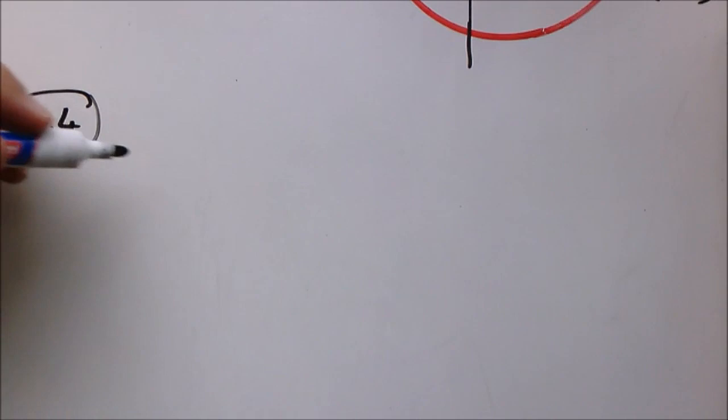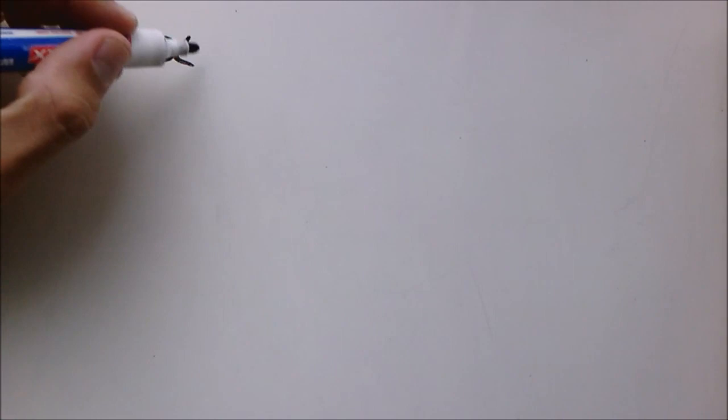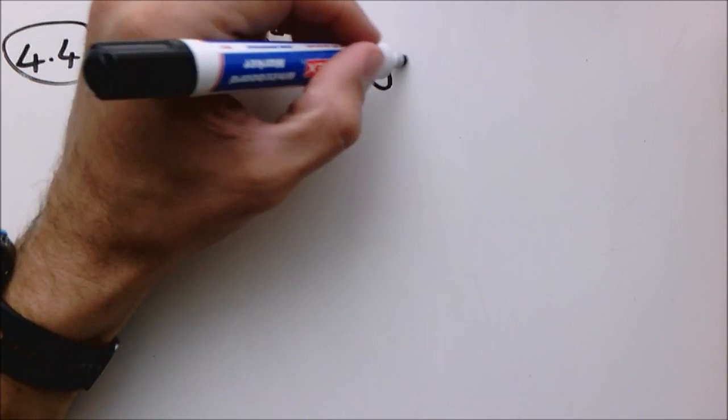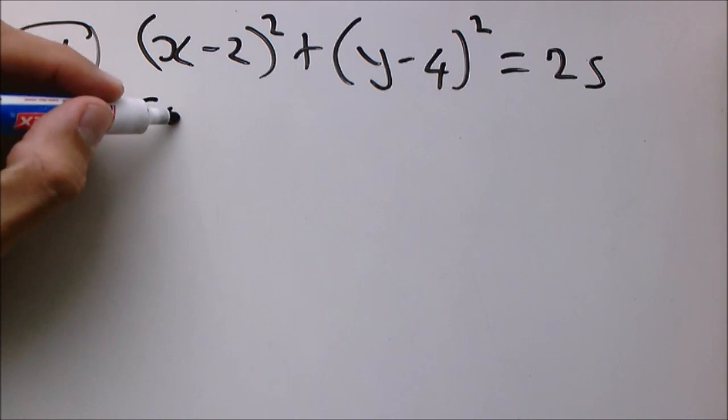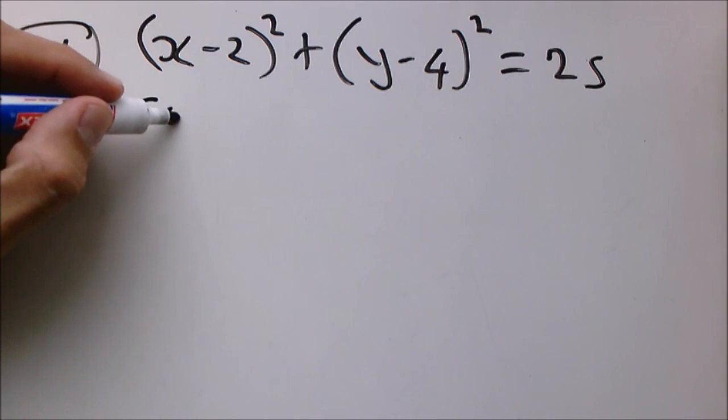So first we are going to write down the equation of the circle which is (x - 2)² + (y - 4)² = 25. We calculated this previously. Then let's do substitution. Substitute y = 0.